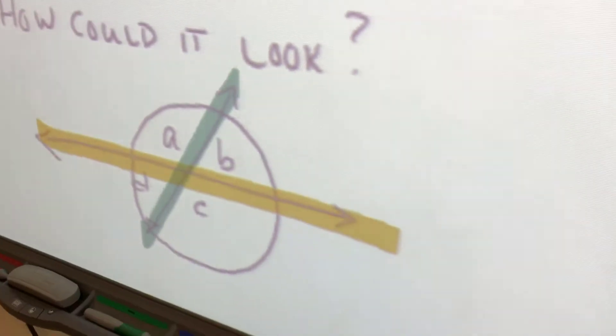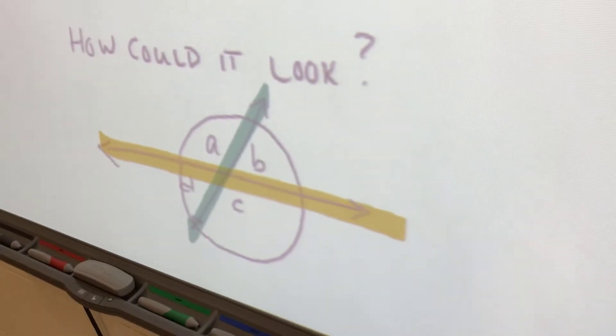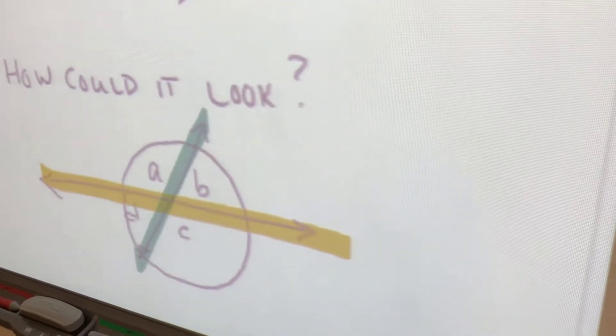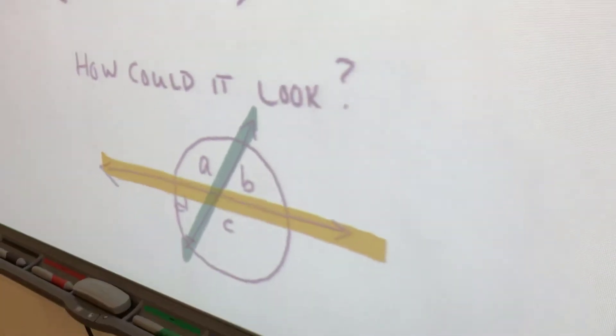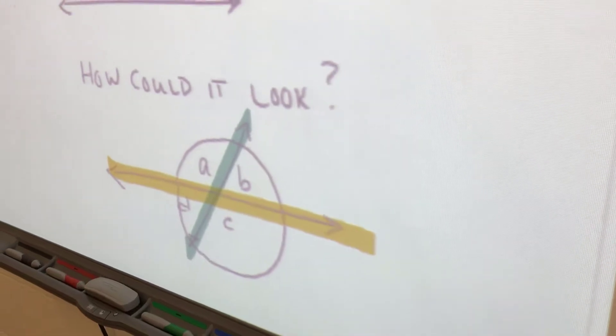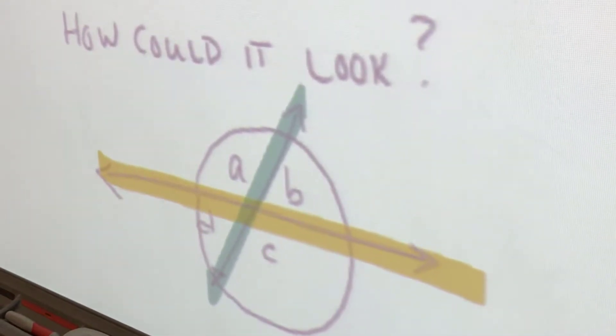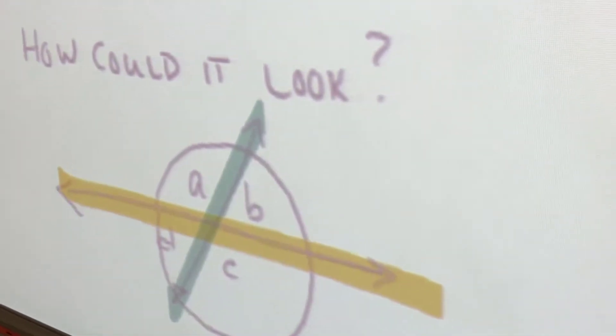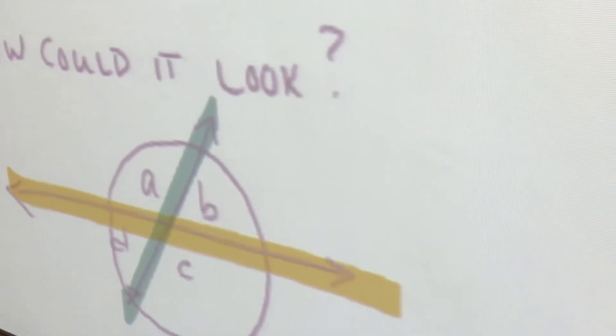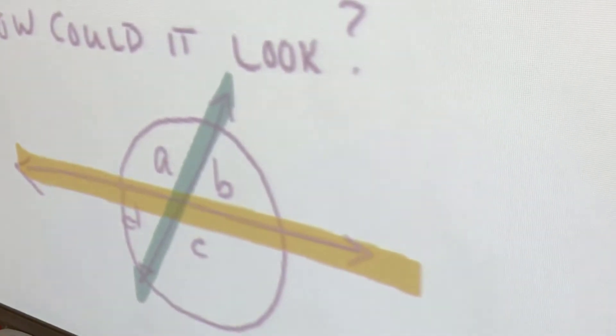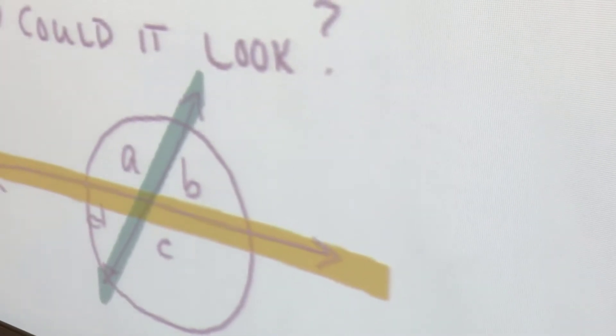So when we look at this, when I look at this circle again, which two angles look to be the same size? There's four angles here. A is what type of angle? Obtuse. What other angle out of these four is obtuse?